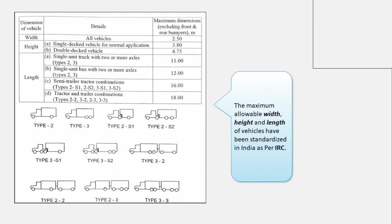In this table, you can see the maximum permissible height, width, and length of the vehicle as given per IRC guidelines. The width is the same for all vehicles, that is 2.5 meters. The length is different for a single-decked vehicle, that is 3.8 meters, and in case of double-decked vehicles like double-decker buses, that is restricted up to 4.75 meters. There are different kinds of lengths available as the truck with engine and unit combinations are different, so the lengths are categorized into four categories.